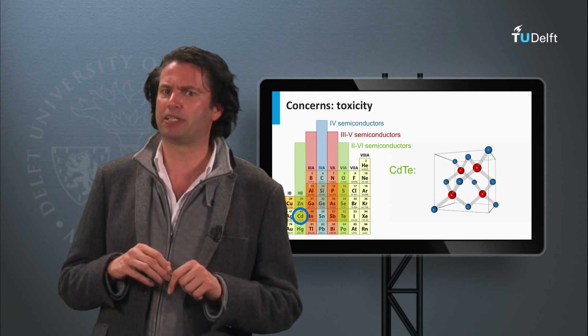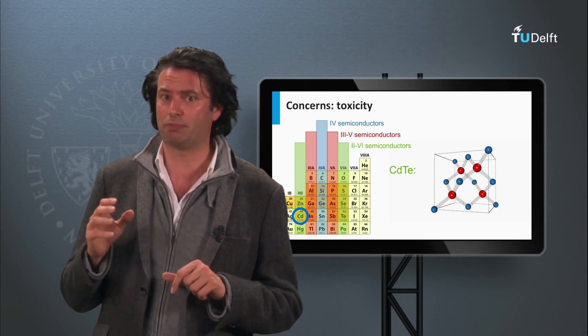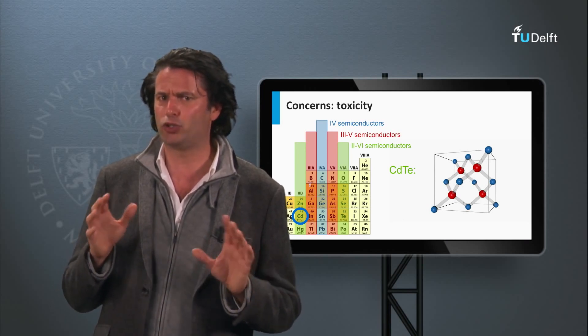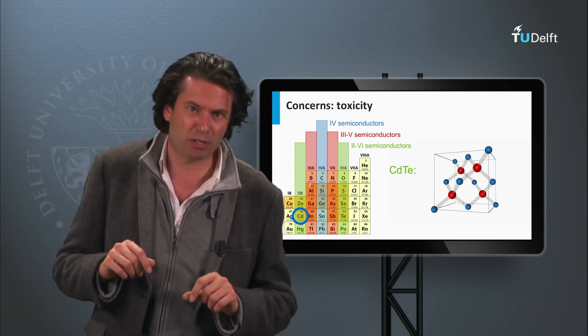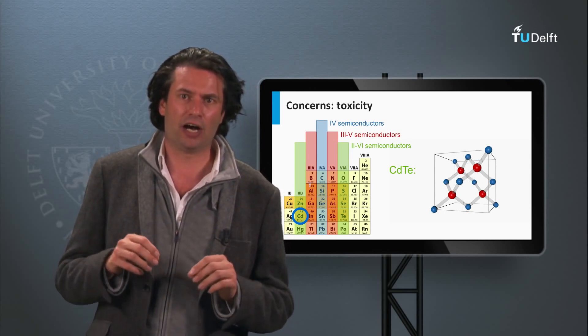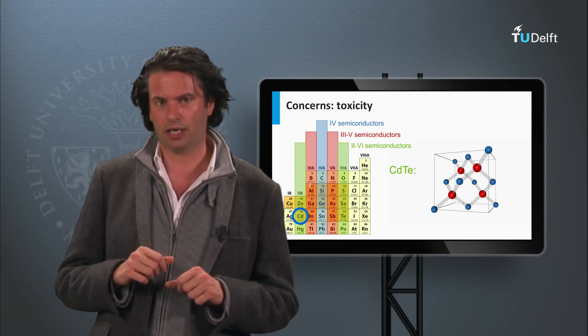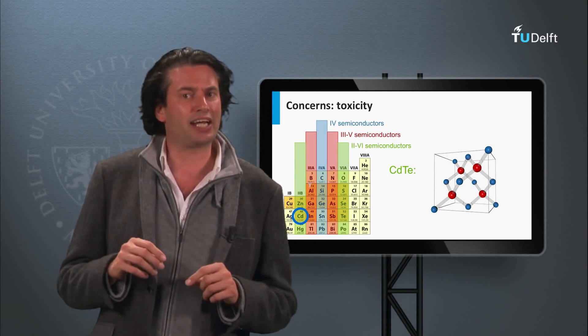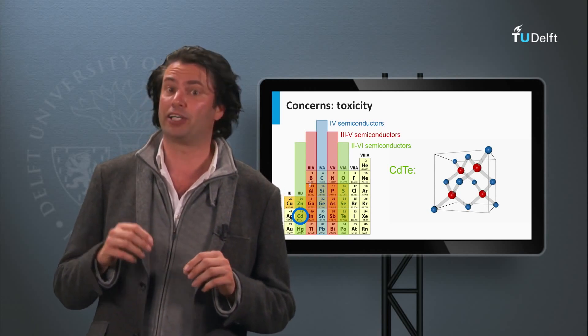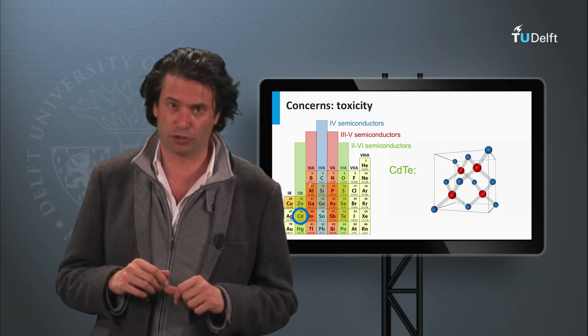A 2 GW per year production capacity, as installed by First Solar at the moment, would take up around 2% of the total cadmium consumption by the industry, and would not yet be a dominant contributor. Nevertheless, recycling schemes have been set up for installed cadmium telluride solar modules.